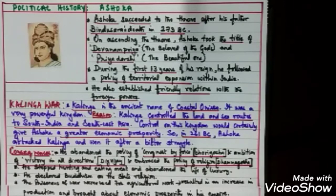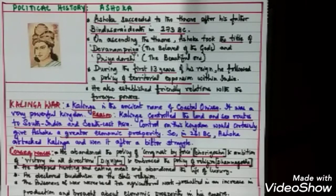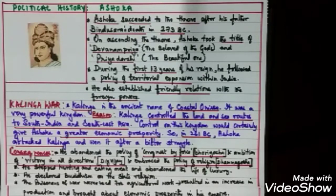Ashoka declared Buddhism as the state religion. Since war was no longer central to his empire, prisoners of war were put to work in agriculture, which resulted in increased production and brought about economic prosperity. However, on account of the abandonment of war, there was a decline in military preparedness and efficiency.